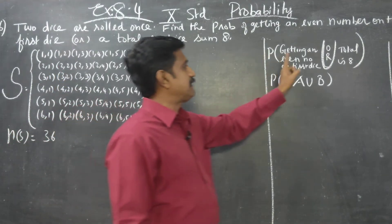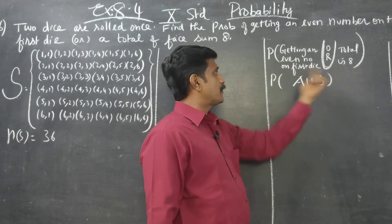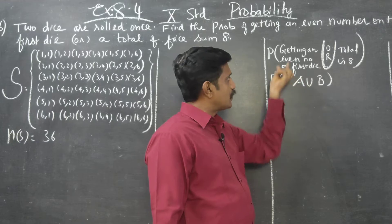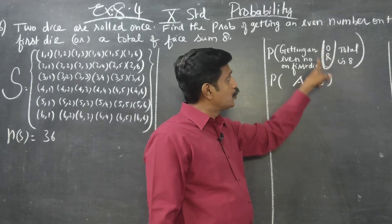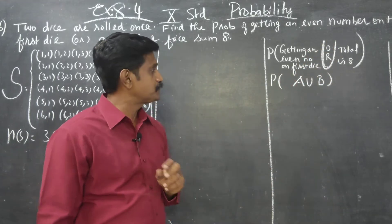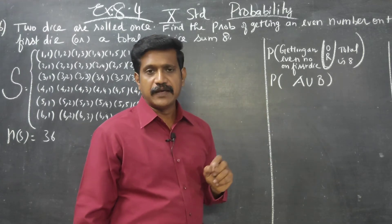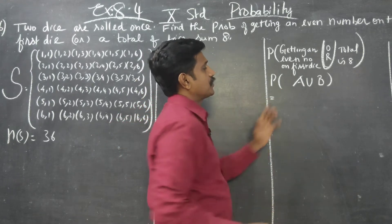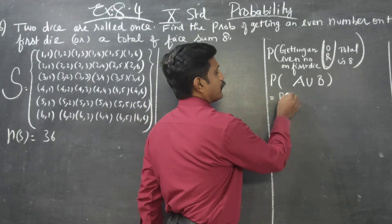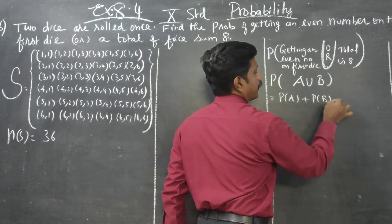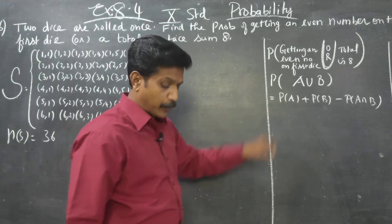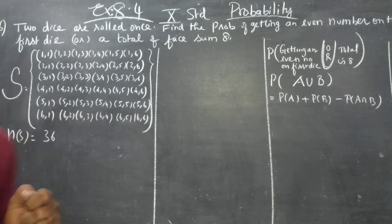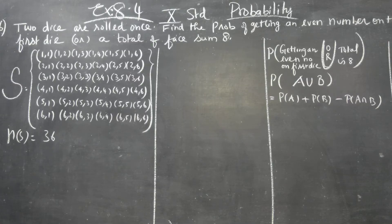For finding the probability of getting an even number on the first die — that is event A — or a total sum of 8 — that is event B — we use the addition theorem on probability. The formula is: P(A∪B) = P(A) + P(B) − P(A∩B).